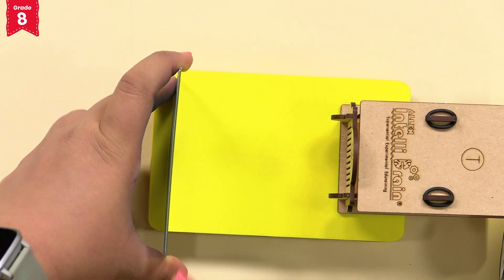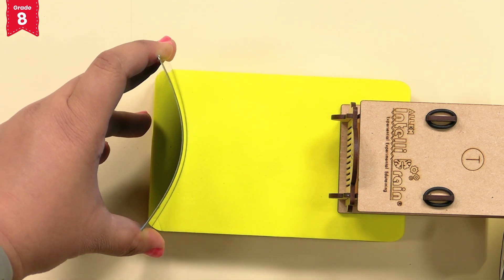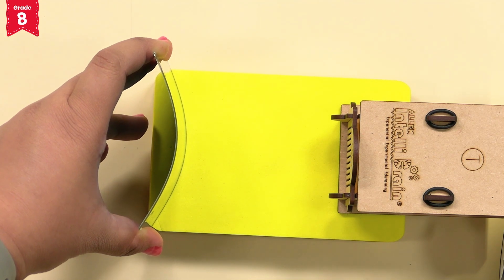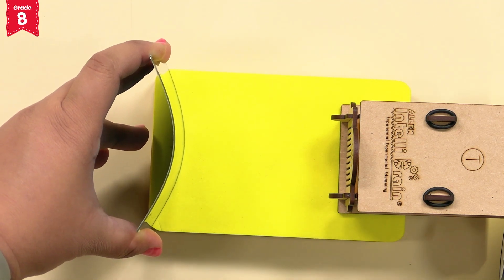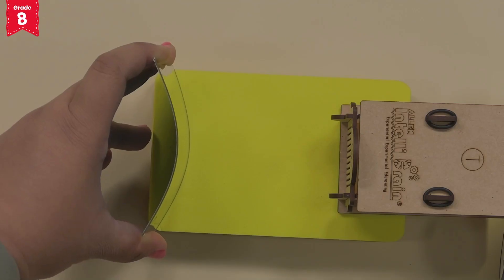Now, carefully bend the mirror outwards like this such that it turns into a convex mirror. Again, can you see any change in the reflected rays? Yes, the reflected rays are now being divergent.